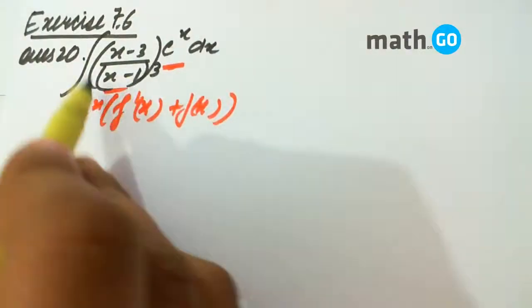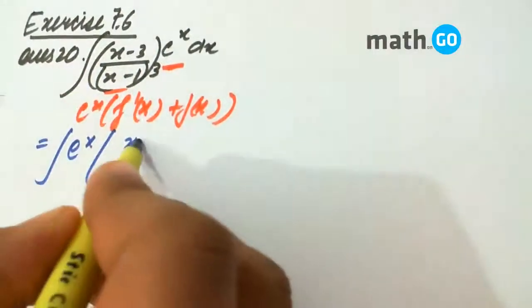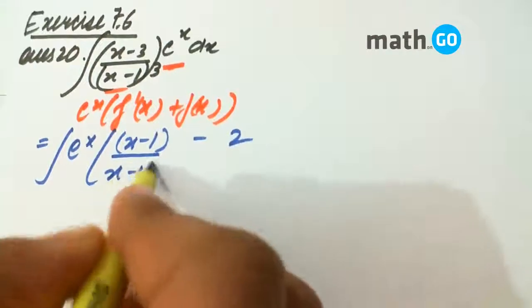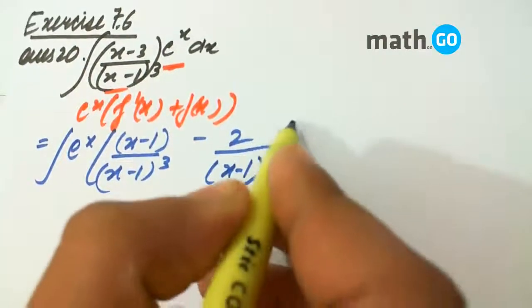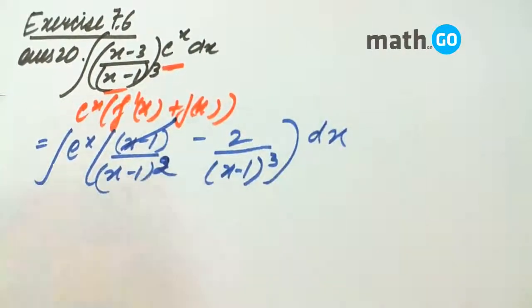This is (x minus 1) to power 3, so it can be written as (x minus 1) minus 2 over the denominator. So this cancels to give this power as 2.